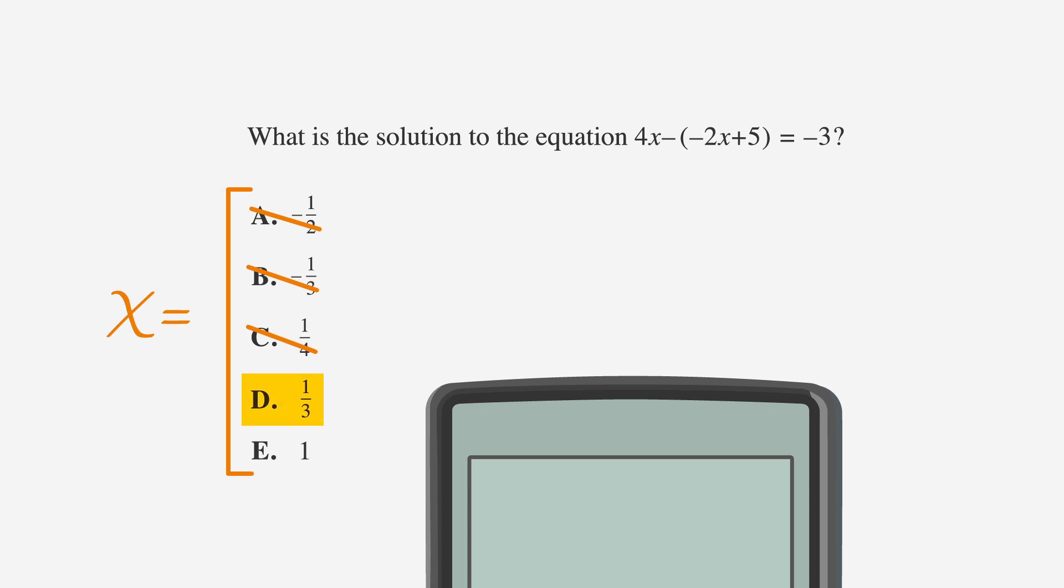Let's try D. This time, let's go straight to the calculator. If we plug in 1 third for x, our expression becomes 4 times 1 third, minus the sum of negative 2 times 1 third, plus 5.